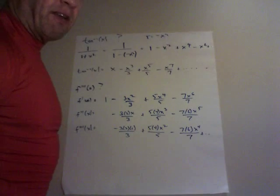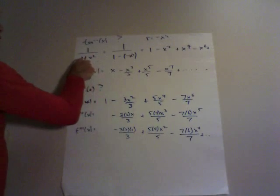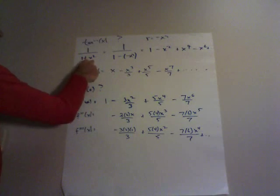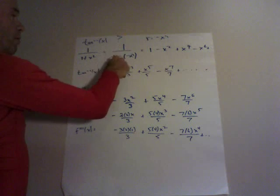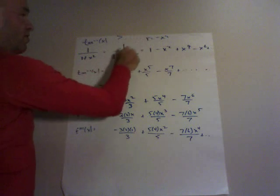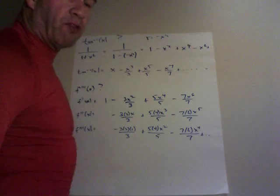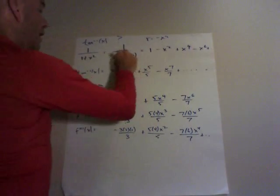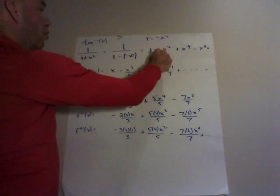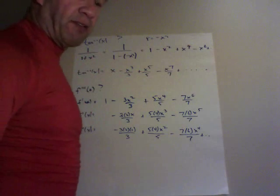So that would take some time. But if I recognize 1 over 1 plus x squared is 1 over 1 minus negative x squared, this is a geometric series with common ratio negative x squared. So I can just write it equal to 1 minus x squared plus x to the fourth minus x to the sixth.